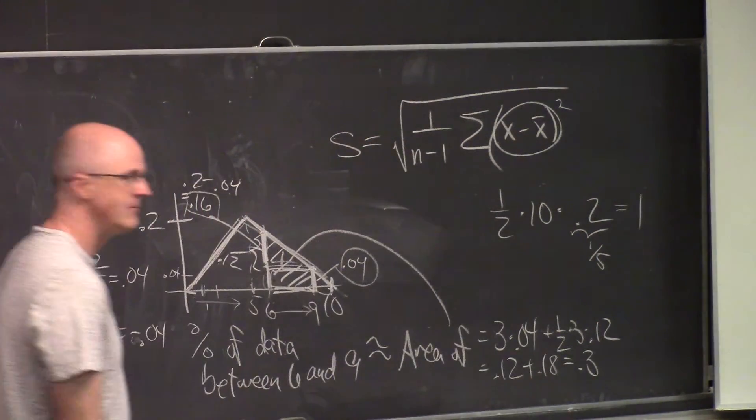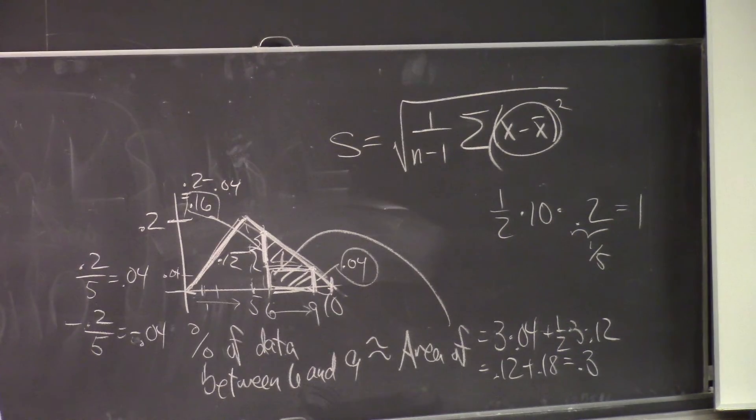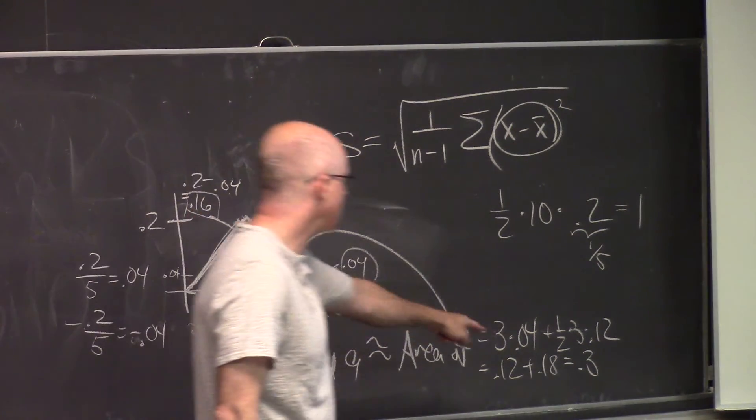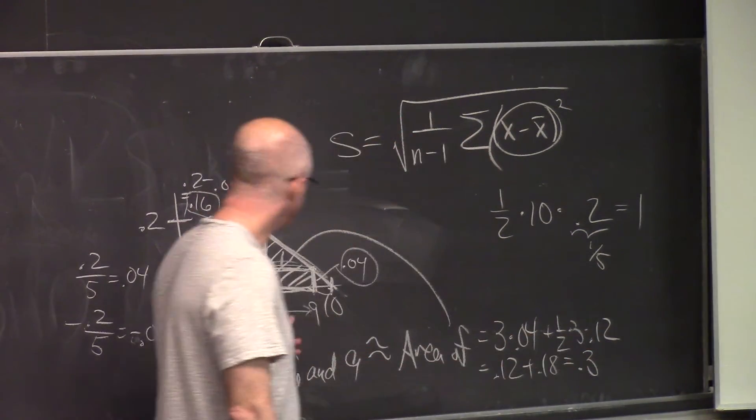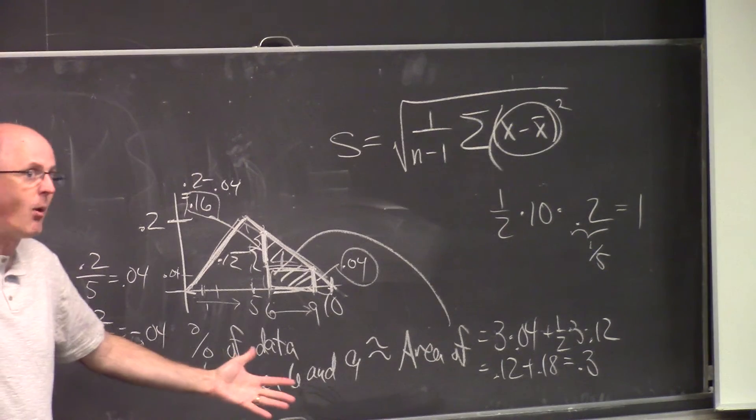The area is 0.3, meaning that for the data approximately 30% of the data is going to be between 6 and 9. That's the point.